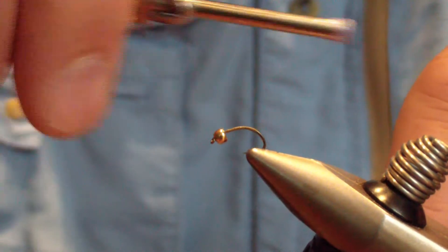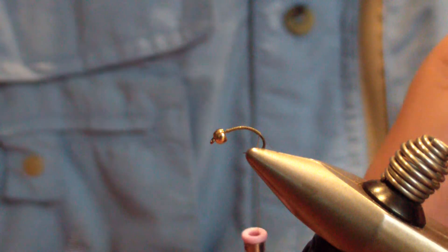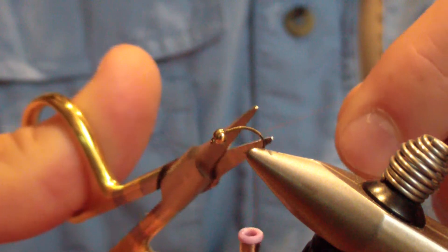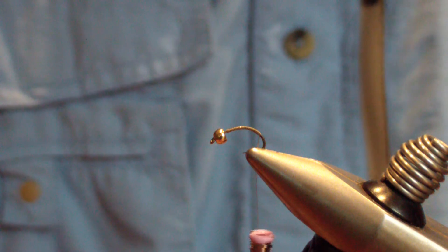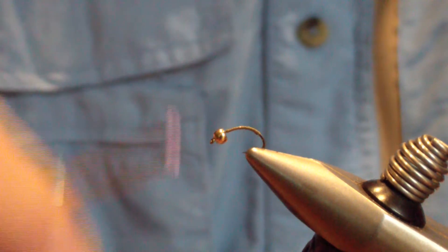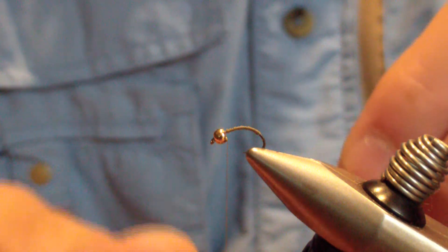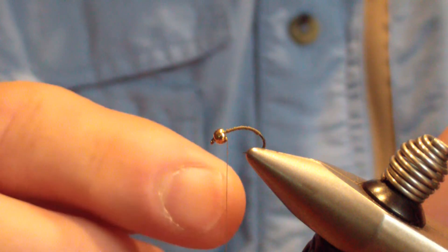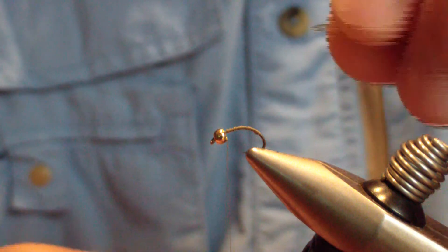Start your thread, work it back, and give it a decent thread base. Take that wrap back to about halfway into the bend of the hook, tie it off, and bring your thread back up behind the bead. I don't add extra weight to this. Sometimes I use lead wire to lock my bead in, but not on this one.